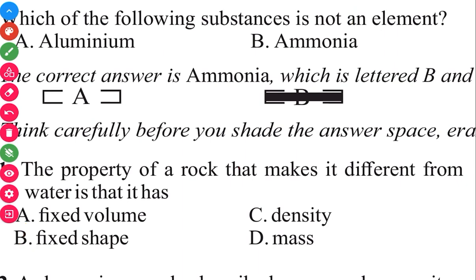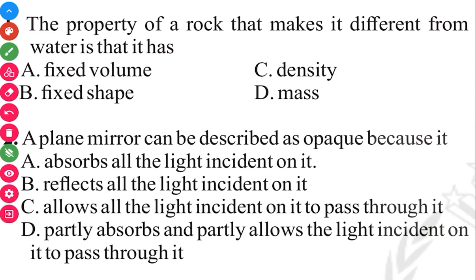Then I move to question 2. A plain mirror can be described as opaque because it reflects all the light incident on it. The answer in 3, 2, 1 is B. Reflects all light incident on it, because light is not able to pass through it.